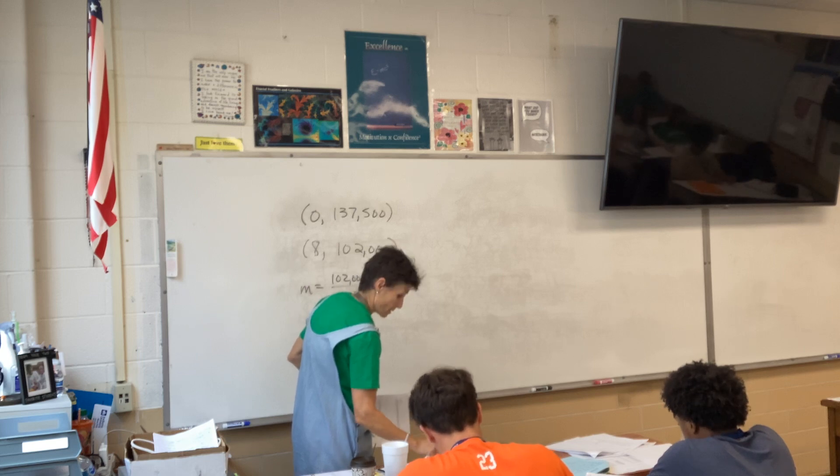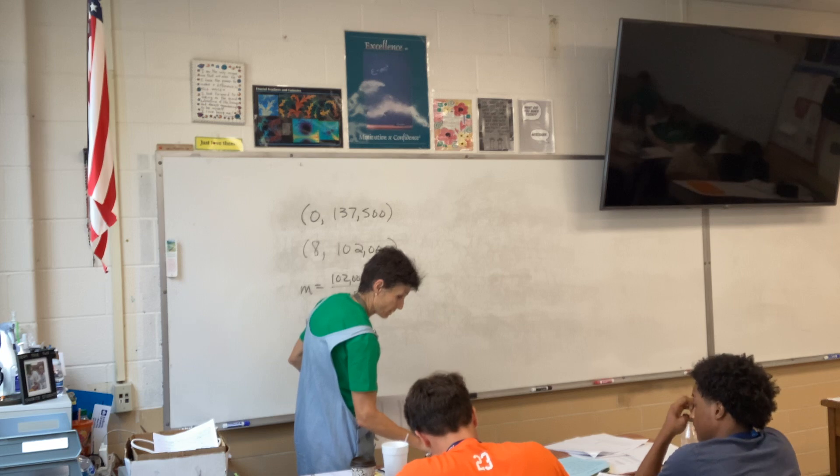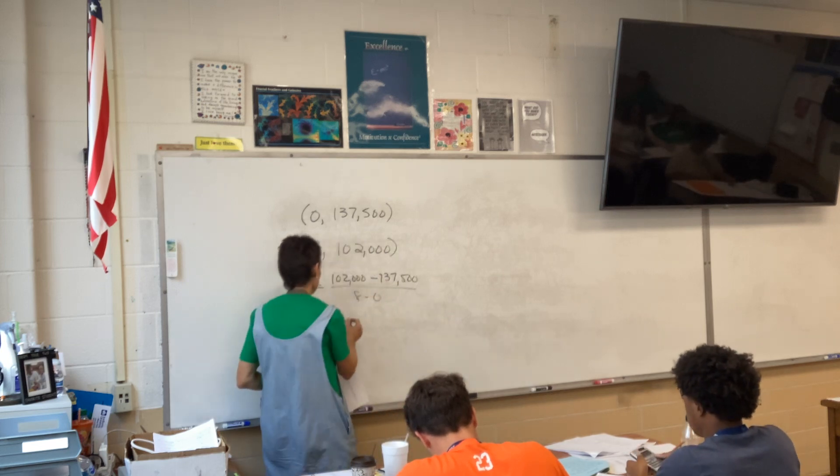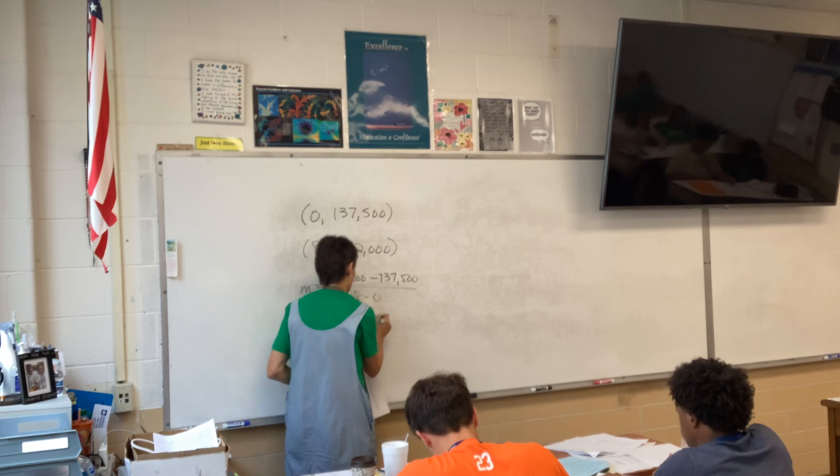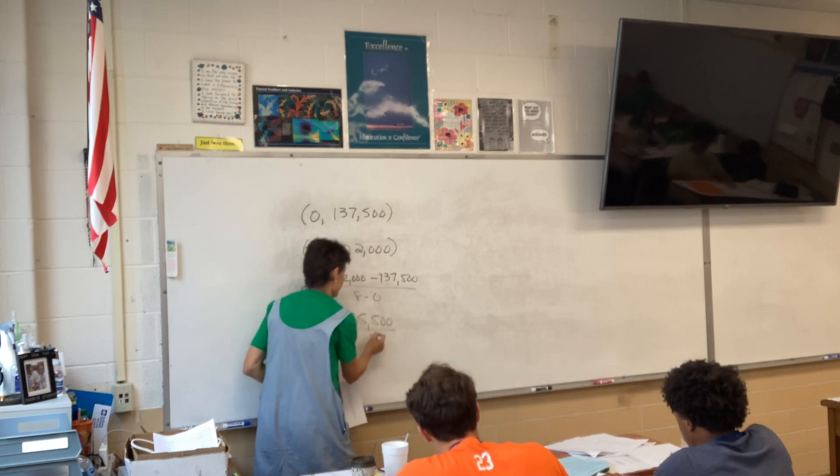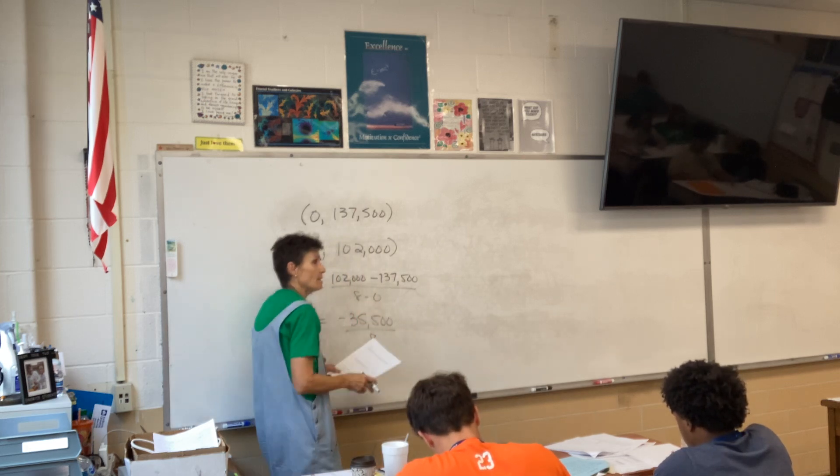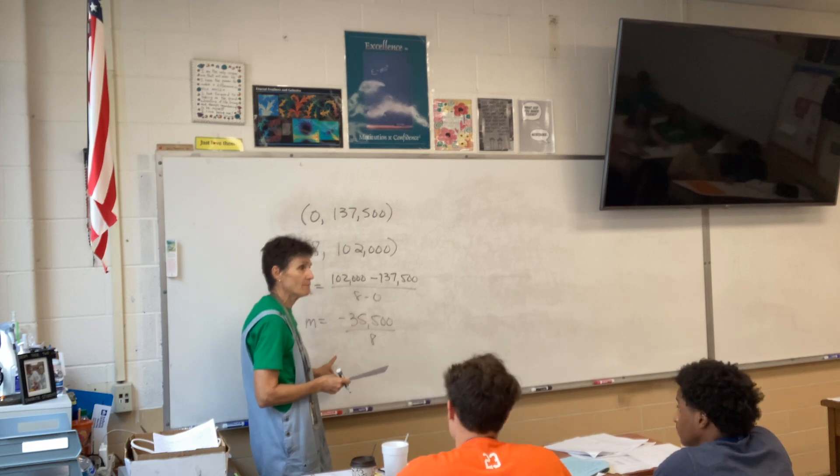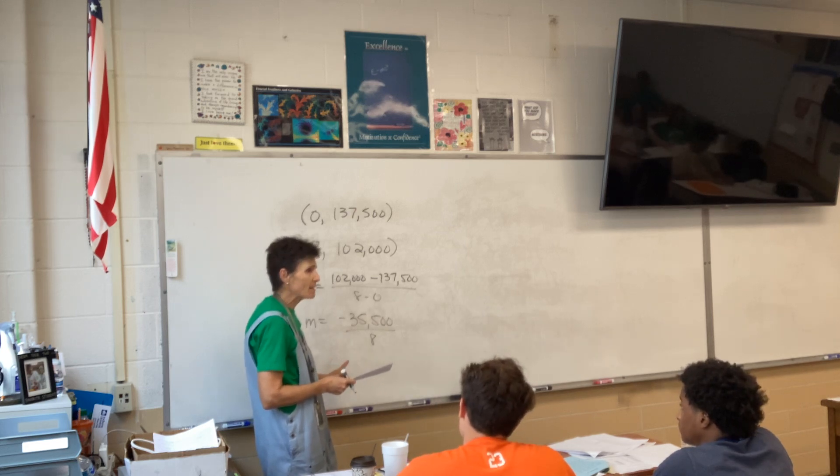So those are big numbers. $102,000 minus $137,500. What do we come up with? Negative 35,500 over 8. Now wait. This slope is going to be a negative number, isn't it? Yeah. Does that make sense?